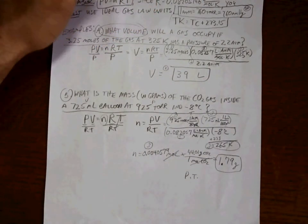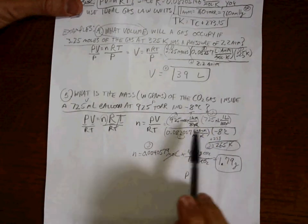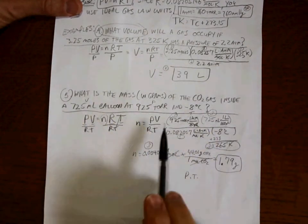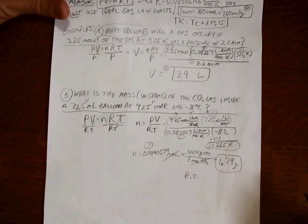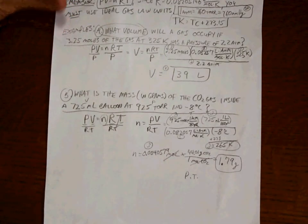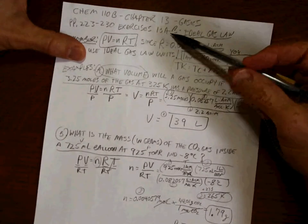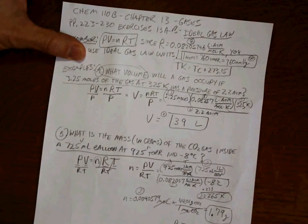So the key here: make sure you use the right units, do your quick algebra step to get what you need, be thinking about sig figs as you go. Hack at it. 13A, 13B. That's where you need to work. Good luck.